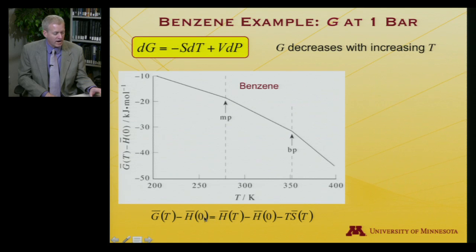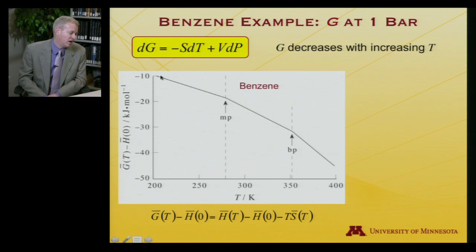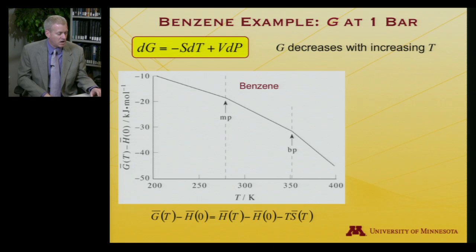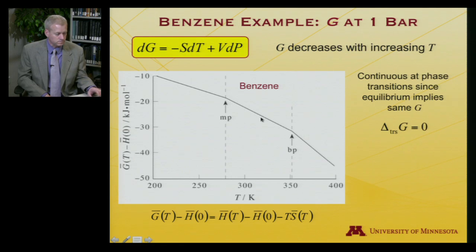And so here is presented graphically the free energy relative to enthalpy at zero, which is also free energy at zero, and this is the expression. And so what you see is we're not starting at absolute zero. We're at about 205 Kelvin or so, and this is the solid phase, and the free energy is going down. It hits the phase transition, and it's a continuous function, but it's got a different slope. And so why should it be continuous at a phase transition?